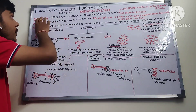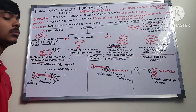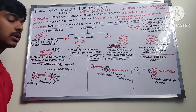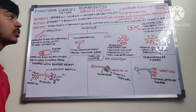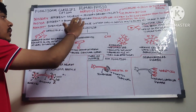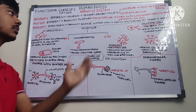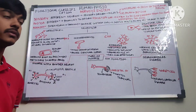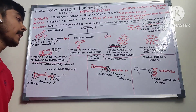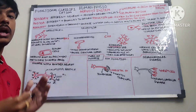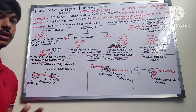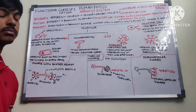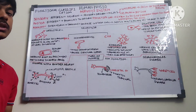A motor neuron is also called an efferent neuron because it carries the command from the central nervous system to the effector organ. These are basically multipolar neurons. A classical example is the neuromuscular junction, where the neuron is located within the CNS but the effector end is located at the neuromuscular junction — forming a synapse where the specific action is performed by transmission of neurotransmitters such as acetylcholine.